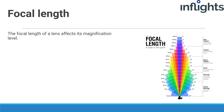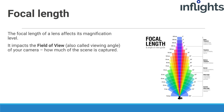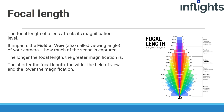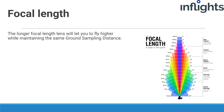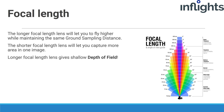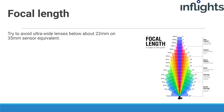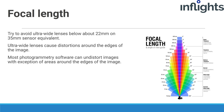The focal length of the lens is basically its magnification, impacting the field of view — how much of the scene is captured. The longer the focal length, the greater the magnification. The shorter the focal length, the wider the field of view. Field of view depends on focal length and sensor size. For example, DJI Phantom 4 Pro's 8.8mm lens on a 1-inch sensor is equivalent to a 24mm lens on a full-frame 35mm sensor. A longer focal length lens lets you fly higher while maintaining the same ground sampling distance, but gives shallower depth of field. Try to avoid ultra-wide lenses — those below 22mm on 35mm sensor equivalent — as they cause distortions around the edges. Most photogrammetry software can undistort images, with the exception of areas around the edges.